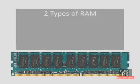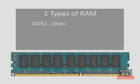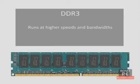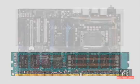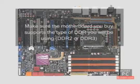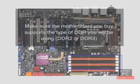There are currently two types of RAM used in computers today. The older type, which has been around for six years, is called DDR2. The newest type, which is becoming more prevalent, is called DDR3. DDR3 is able to run at higher speeds and therefore higher bandwidths. Keep in mind that most motherboards support either DDR2 or DDR3, so make sure the motherboard you buy supports the type of DDR you'll be using.